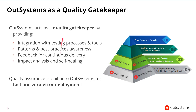To help reduce the mistakes that are made, OutSystems acts as a quality gatekeeper. It does this by providing key features that help ensure the quality of your application, while remaining open enough to integrate with your existing quality assurance processes and testing tools.